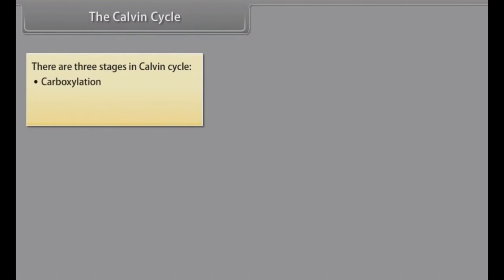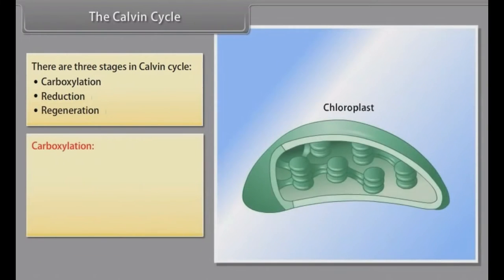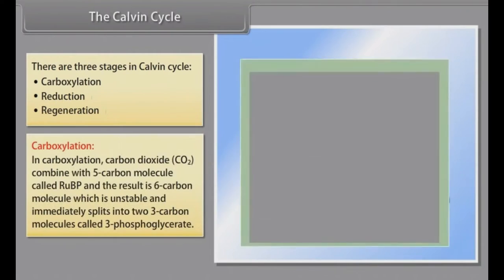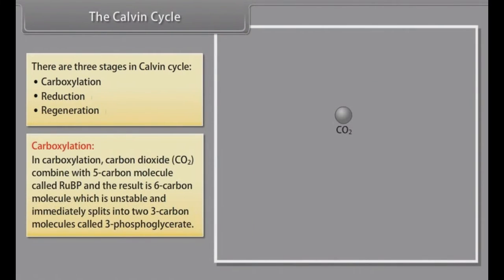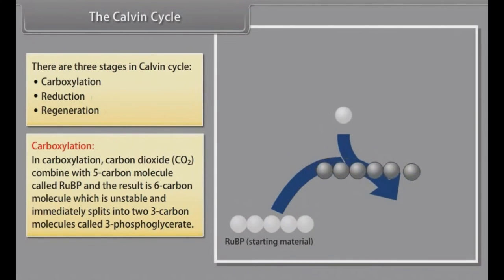The Calvin Cycle: There are three stages in Calvin cycle: carboxylation, reduction, and regeneration. In carboxylation, carbon dioxide CO2 combines with 5-carbon molecule called RUBP and the result is a 6-carbon molecule which is unstable and immediately splits into two 3-carbon molecules called 3-phosphoglycerate.